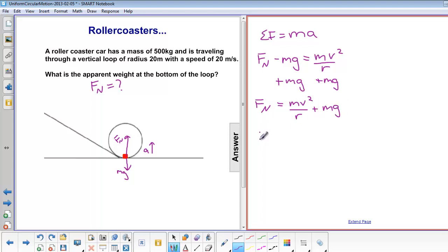We can factor out the m. And now we can plug in our numbers. Mass is 500 kilograms. V is 20 meters per second, and that's squared.